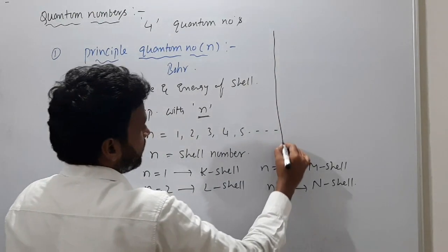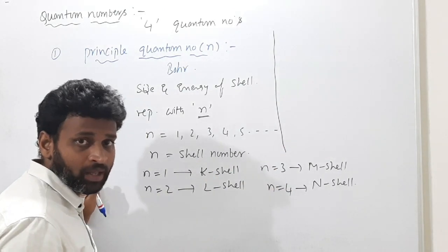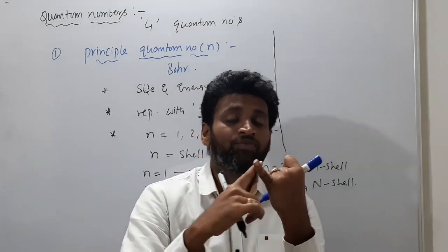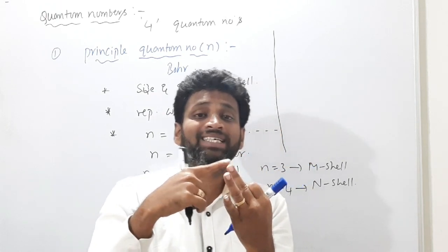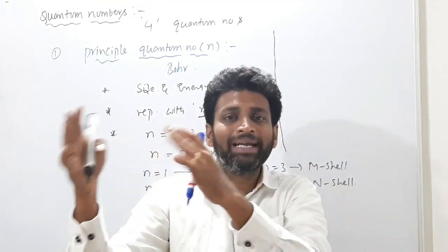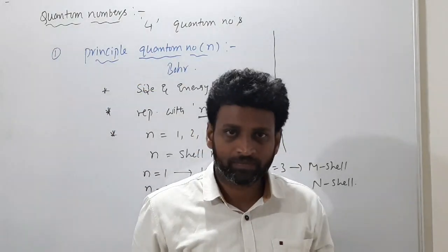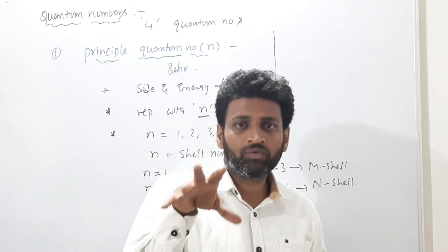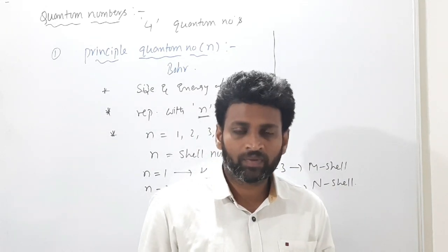Shells consist of subshells. Those subshells are called S, P, D, F. Those SPDF subshells consist of degenerate orbitals. So the structure is: shell → subshells → degenerate orbitals. Think of it like a building: the building is the atom, every floor is a shell, rooms on each floor are subshells, and divisions within rooms are degenerate orbitals.